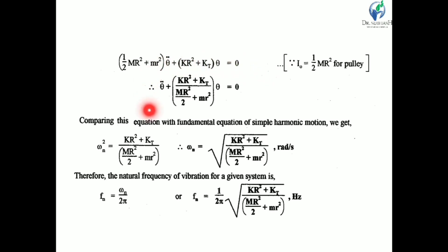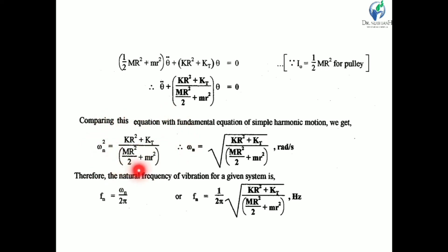Simplifying the equation, we get: (I_O + mR²)·theta-double-dot + (KR² + K_T)·theta = 0. Substituting I_O = ½MR²: (MR²/2 + mR²)·theta-double-dot + (KR² + K_T)·theta = 0. Finally: theta-double-dot + [(KR² + K_T) / (MR²/2 + mR²)]·theta = 0. So omega_n² = (KR² + K_T) / (MR²/2 + mR²), and natural frequency f_n = (1/2π)·√[(KR² + K_T) / (MR²/2 + mR²)]. This is derived using the equilibrium method.